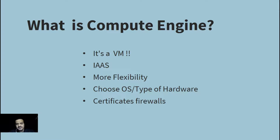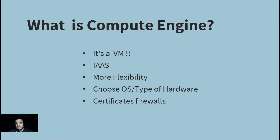Compute Engine provides more flexibility — you can spin up a VM on GCP with the type of OS you want, the type of hardware you want, the RAM and memory you want, and you can also configure firewalls and other applications. Compared to App Engine, it gives you minute-level configuration access to the VM.